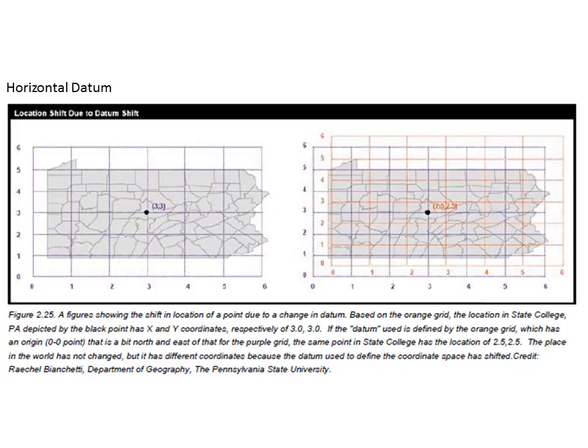As we shift between different horizontal datums that result from using different ellipsoids, we can see that changes in the datums over time, for example, the North American 1927 to the North American 1983, can mean that we can misappropriate space. We might be off by 500 meters or a kilometer when we convert from one to the other, and this is called the datum shift.